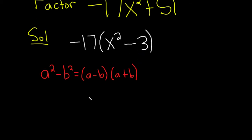You can actually be really clever and write it like this. Negative 17 parentheses x squared minus, and then you can write it as the square root of 3 squared. Like that.